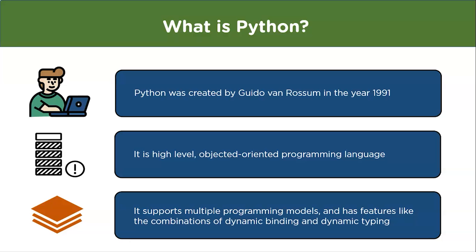Python also contains features like dynamic binding and dynamic typing. It is a dynamic language with high-level data types, meaning development takes place faster in Python than in other programming languages like Java and C++.